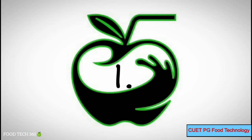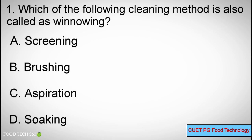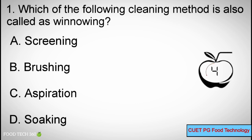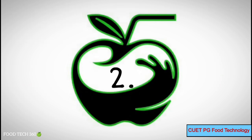Question number 1. Which of the following cleaning methods is also called as winnowing? Option A: Screening, B: Brushing, C: Aspiration, D: Soaking. Correct answer: C, Aspiration.